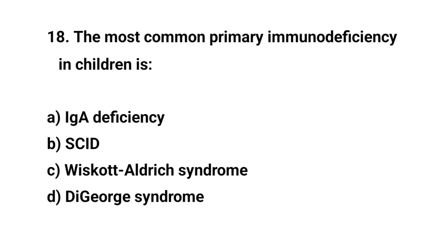Question No. 18. The most common primary immunodeficiency in children is? The right answer is: IgA deficiency.